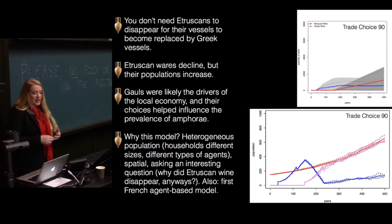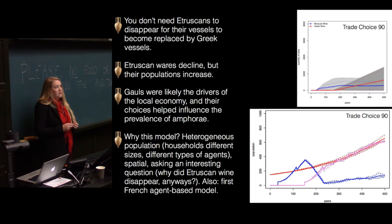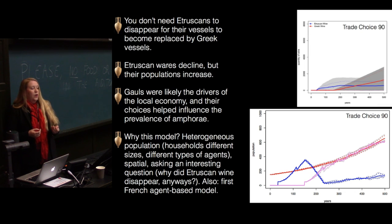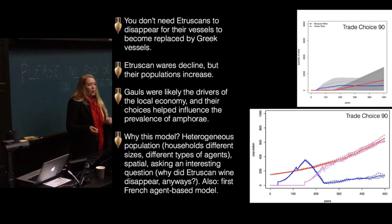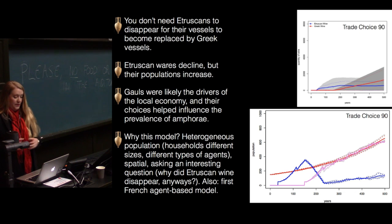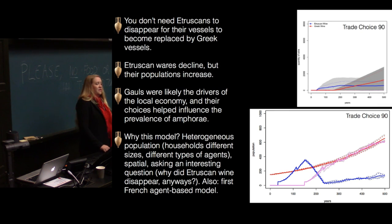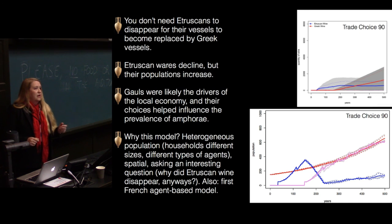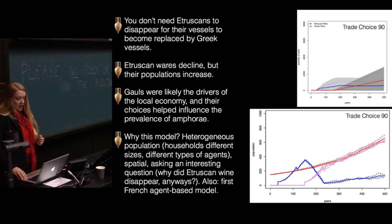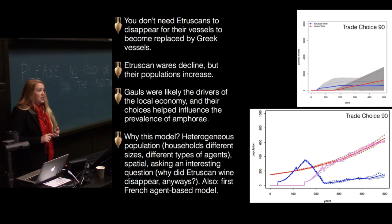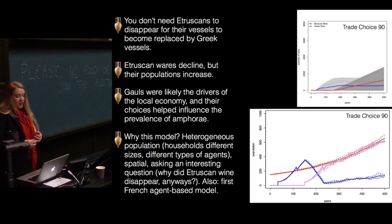You don't need Etruscans to disappear for their vessels to become replaced by Greek vessels — Etruscans can still be around for a while. What you really care about is how the Gauls are interacting with the local colonists for this luxury good. As Etruscan wares decline, there is actually a little population increase because Etruscans are able to store enough grain to still reproduce until their grain stores wear out. This model was made because there is a heterogeneous population — households are different sizes, there are different types of agents, it's spatial, and it asks an interesting question French archaeologists have been wondering about for a long time: why did Etruscan wine disappear? As far as I know, it's the first French agent-based model for this area.